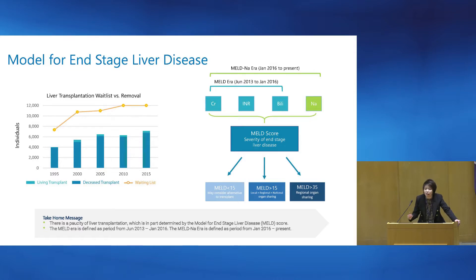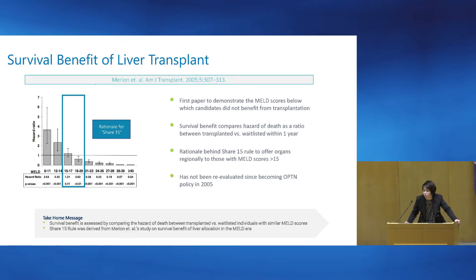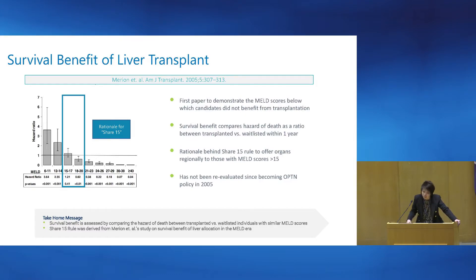While we changed the way we calculate MELD, the numerical guidelines that guide either increased regional or national organ-sharing have not changed. Specifically, we want to talk about the SHARE 15 rule. This is a UNOS policy that states if you have an organ available for transplant, it will preferentially go to somebody with a MELD score greater than 15, either locally or regionally, before it returns to your local center to be transplanted in someone with a MELD score less than 15.